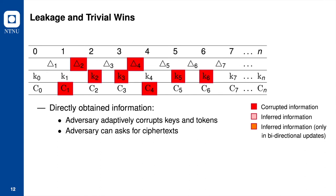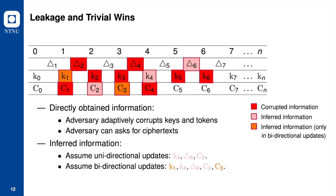Now we look at how the adversary can trivially win a security game. Here we only discuss one trivial win condition; for the analysis of all trivial win conditions, please refer to our paper. Recall that the update tokens can be used to gain more information, which provides the adversary more power.